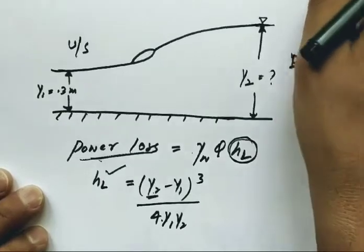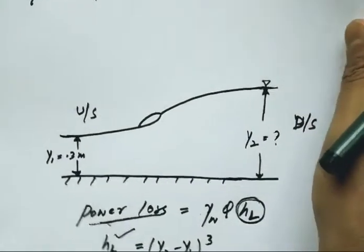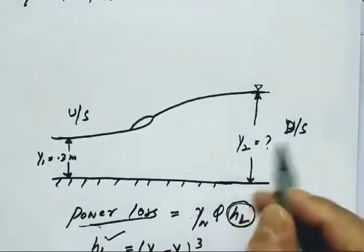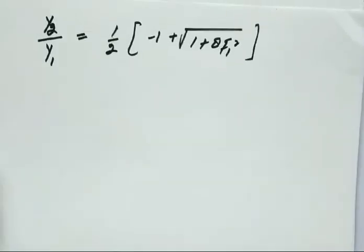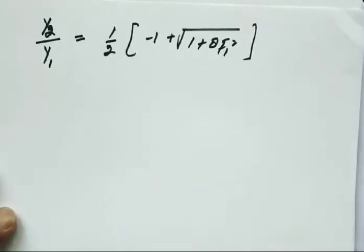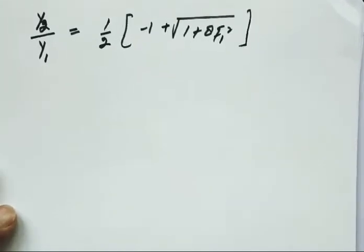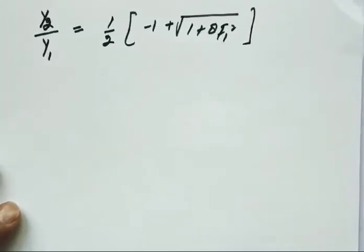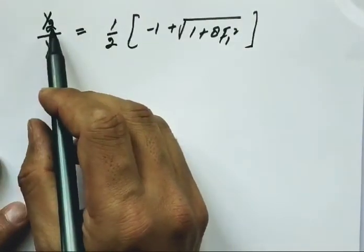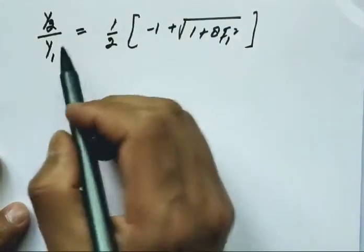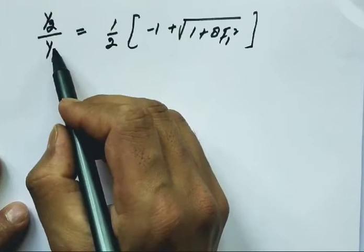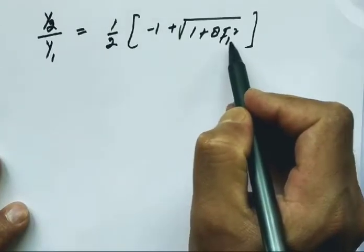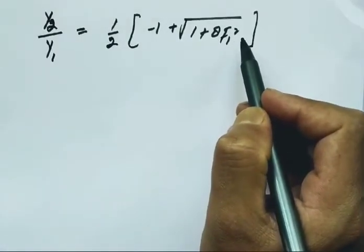Head loss equals (y2 minus y1) whole cube divided by 4y1y2. To find y2, we need to use the Belanger momentum equation. According to the Belanger momentum equation, if you need to find y2 depth, you use this equation. If you needed to find y1, you would use y1/y2 with F2 squared.